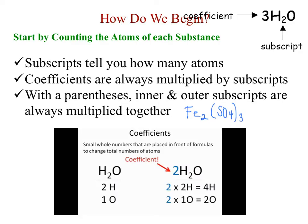So how do we begin? Well, the first thing we have to do is start counting the atoms of each substance. In order to do that, we have to be comfortable with two terms. The first is the word subscript — the subscript tells you how many atoms you have. The second is the word coefficient. Coefficients are small whole numbers that sit in front of chemical formulas, and they are always multiplied by the subscripts. If we take a look at the bottom picture, you will notice that H2O on the left has two hydrogens and one oxygen. If I place the coefficient of 2 in front of H2O, I have to multiply that coefficient by each subscript, giving me four hydrogens and two oxygens.